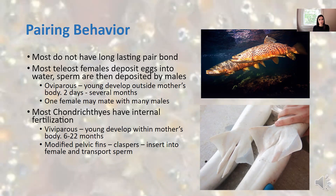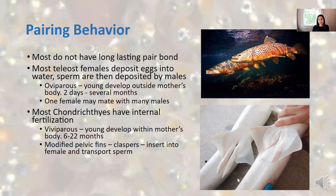Most chondrichthyes - so sharks, rays, and skates - have internal fertilization. Their young develop within the mother's body, and that's called viviparous, essentially live birth. That development time is generally six to twenty-two months, much longer than external development. What allows for internal fertilization in the chondrichthyes are modified pelvic fins called claspers. Males have claspers, females don't. The male inserts claspers into the female's cloaca and sperm is transported along them to ensure internal fertilization of eggs, followed by internal development and live birth.